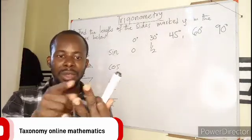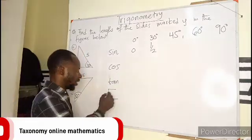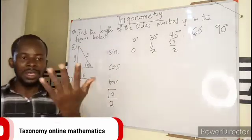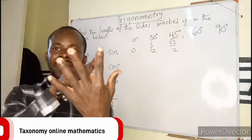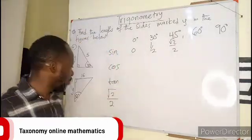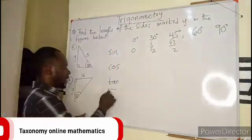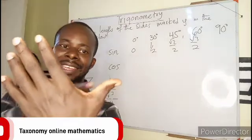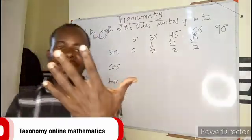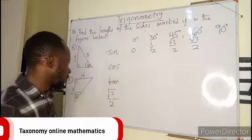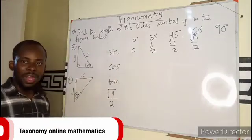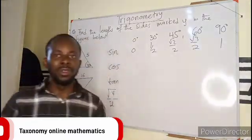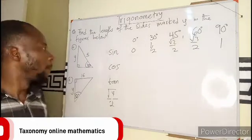45, how many fingers below? 2 fingers. So in this place it will be 2, root 2 over 2. 60, how many fingers below? 3. So we have root 3 over 2. Let's move to 90, how many fingers below? We have 4 fingers. So I will be putting 4 here. The square root of 4 is 2, 2 over 2 is 1. So sine 90 is 1.